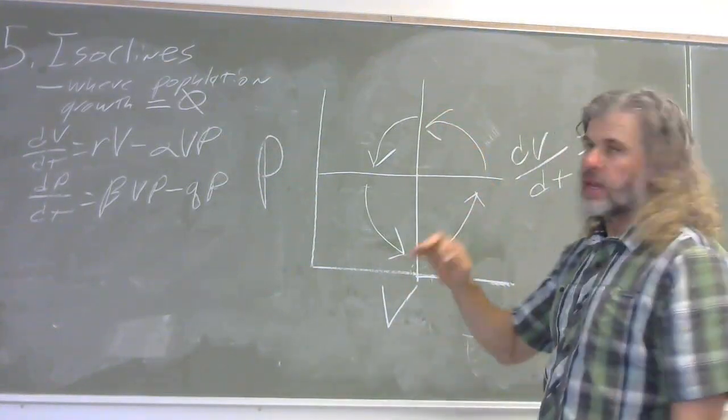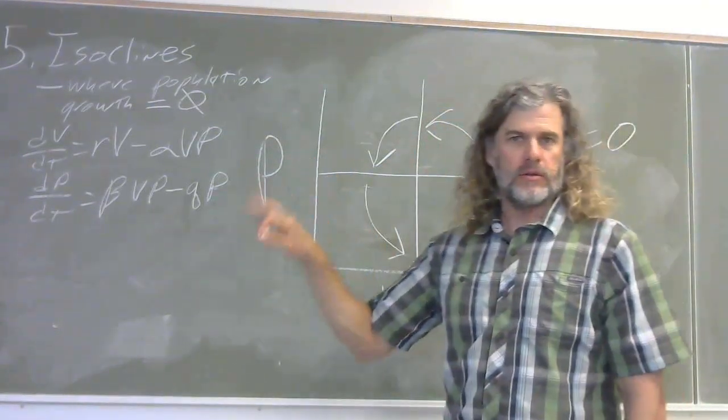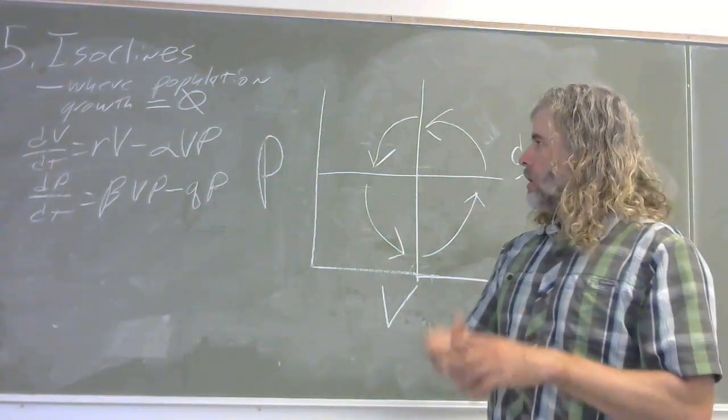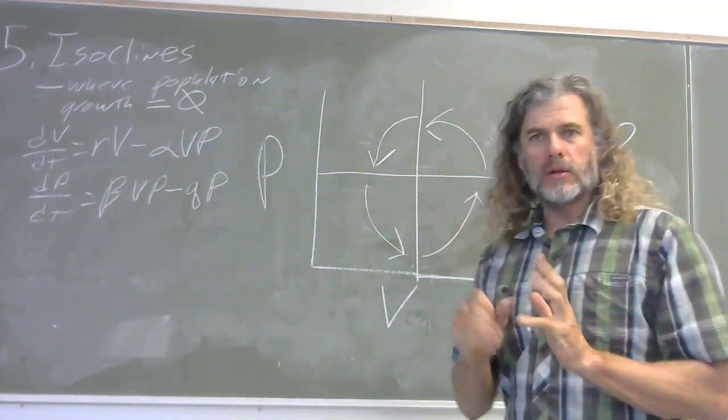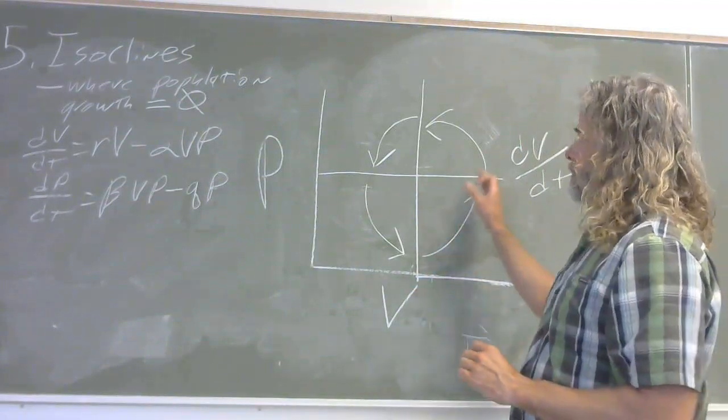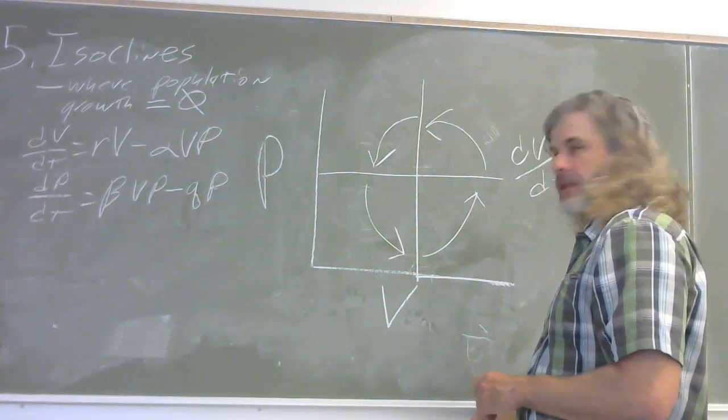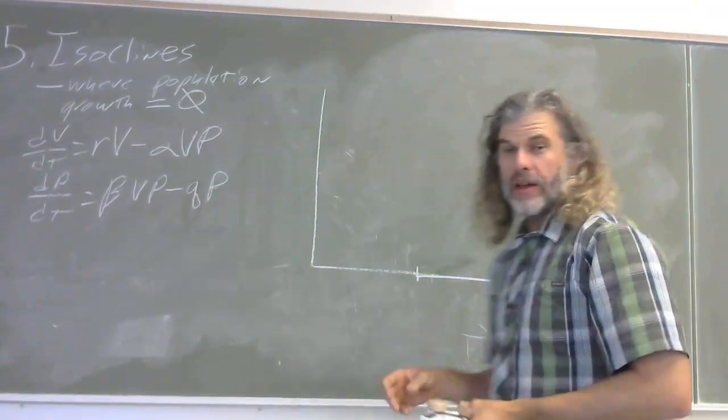So what will happen at least in this model, right? And remember, a model is an abstraction of reality. What happens within this model is that it's linked and it will have these cyclic population dynamics.